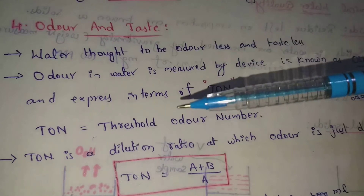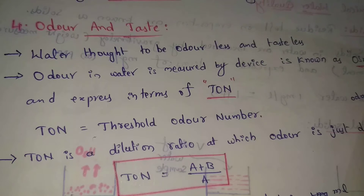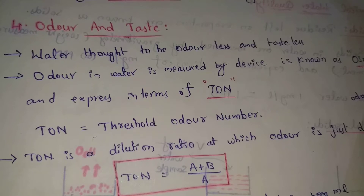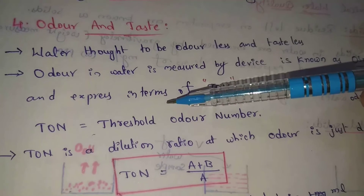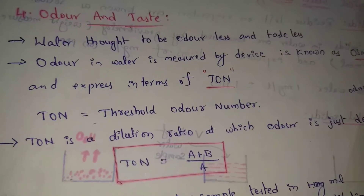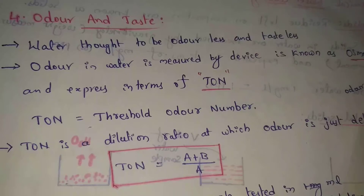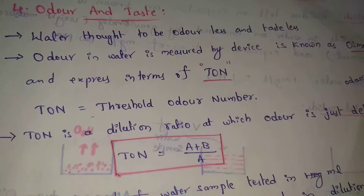Odor is expressed in terms of TON. TON means Threshold Odor Number: T means Threshold, O means Odor, N means Number.